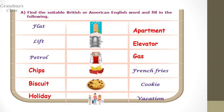Now Question A: Find the suitable British or American English word and fill in the following. The first one, the word given is flat, so the American word is apartment. Next one, lift — it is called elevator. Third one, petrol — it is called gas. The same way in British it is called chips, but in American it is called french fries. Biscuit — cookie. Holiday — vacation.